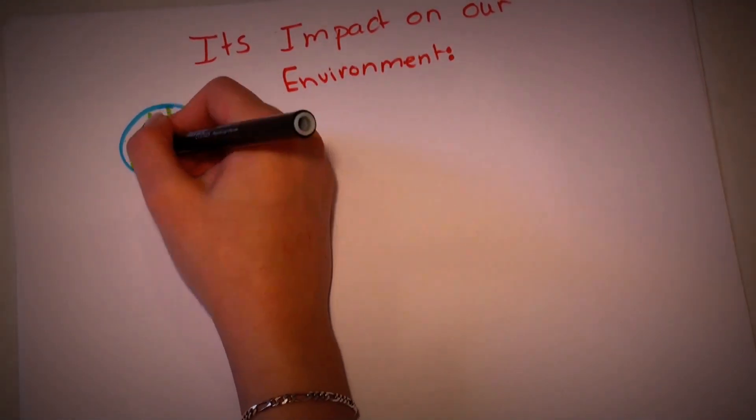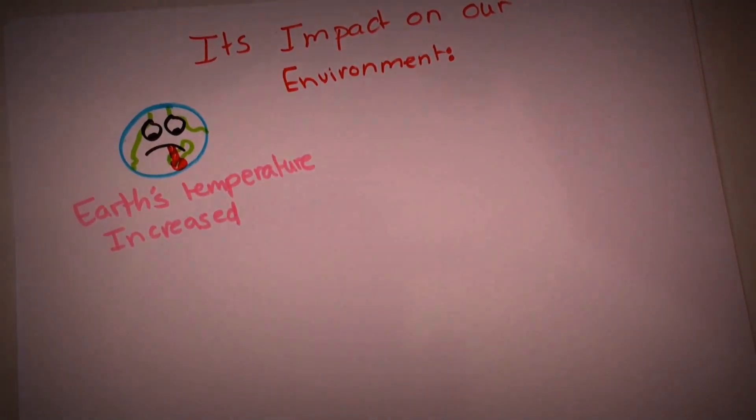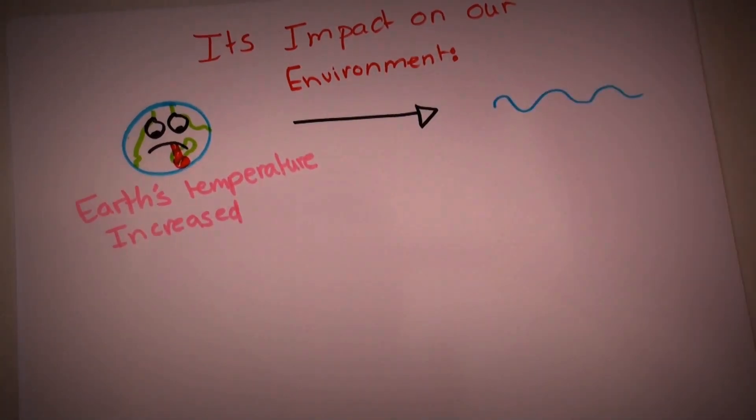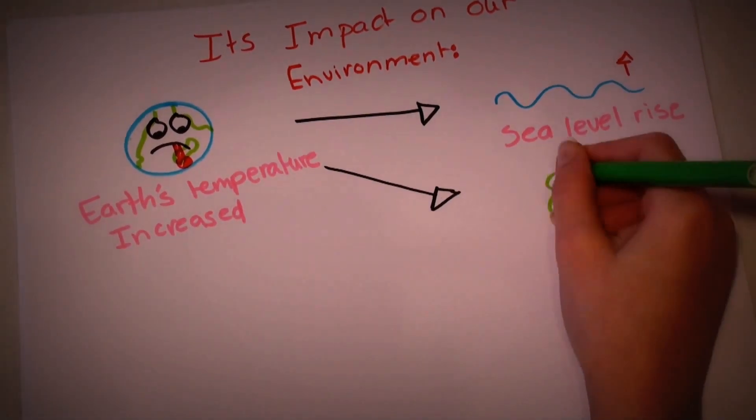But what harm does it make on our environment? The Earth's temperature increased, resulting in the polar ice caps melting, making sea levels rise and islands get submerged.